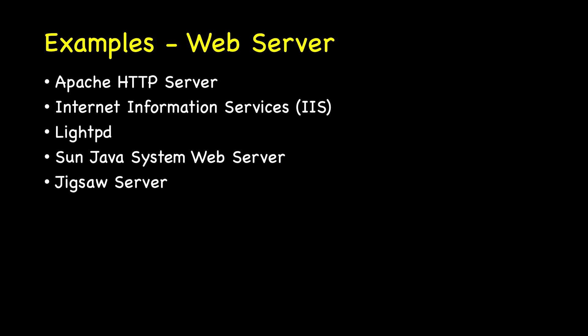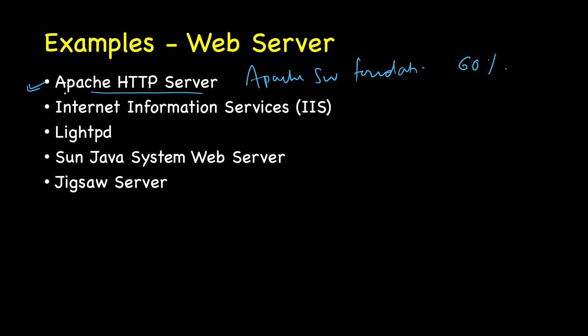Now let's see some examples of web servers. The most popular web server is Apache HTTP Server, developed by the Apache Software Foundation. Roughly 60 percent of web servers run Apache. It can be installed on all operating systems including Linux, Unix, Windows, FreeBSD, Mac OS X, and more. It is also open source software, which contributes to its popularity.